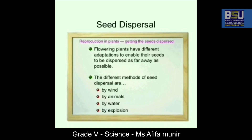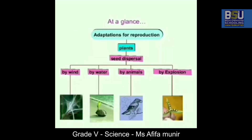The methods of seed dispersal are: by wind, by animals, by water, and by explosion. If you look at the pictures shown here, you can see how different types of seeds are being dispersed using these different methods.